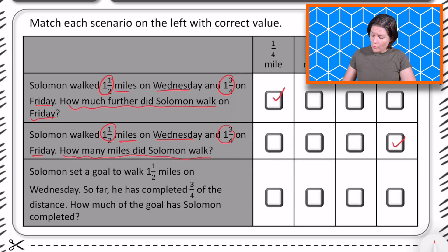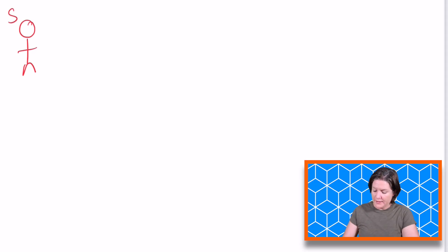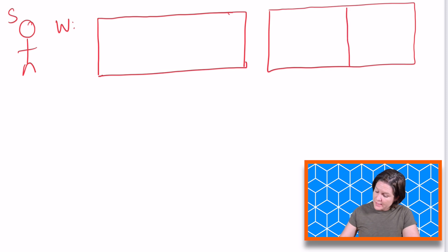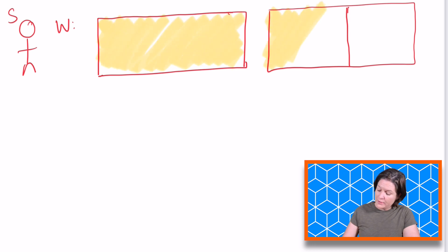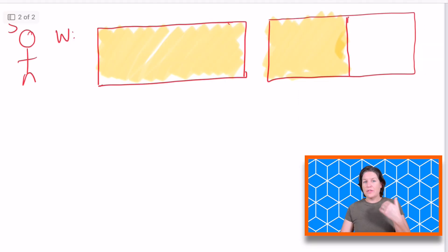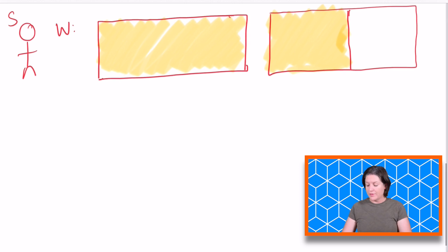Now for the last one, it says that Solomon set a goal to walk one and a half miles on Wednesday. So far, he has completed three fourths of that distance. How much of the goal has Solomon completed? So here's our guy Solomon. Again, it is Wednesday and he set a goal to walk one and a half mile. So I'm going to draw this, turn this into a half and I'm going to use this rectangle shape. So the goal is to walk one whole mile and a half mile. So far, he has completed three fourths of the distance. How much of the goal has Solomon completed? He's completed three fourths of the distance. That means he's completed three fourths of the whole in a sense and three fourths of the half a mile. Maybe not really in that order, but essentially mathematically that's what's going on.